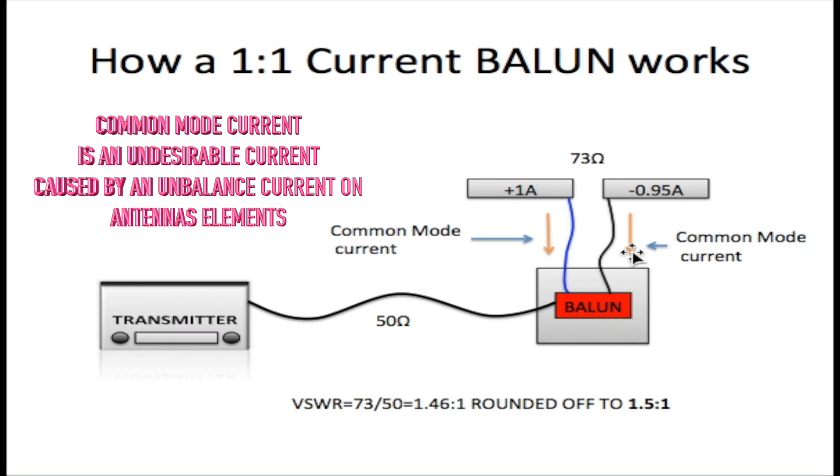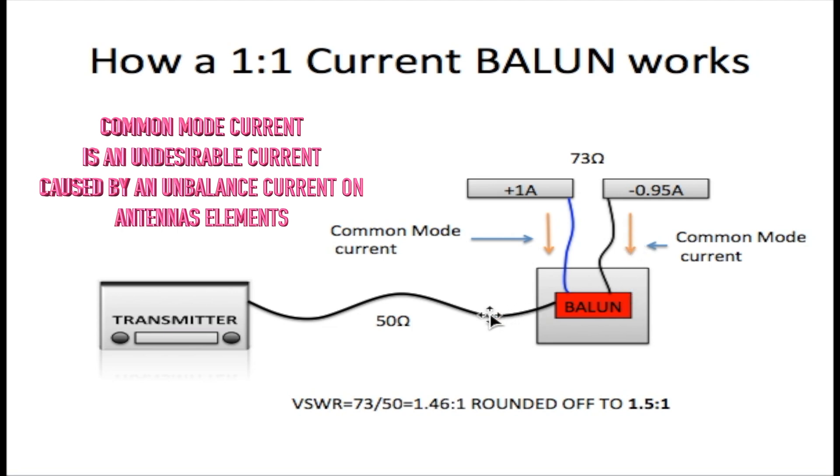It may not be a lot, but any kind of common mode current that gets onto this cable will cause a problem. So the purpose of this Balun is to stop the common mode current from getting through to the cable. The Balun has two purposes. It connects balanced to unbalanced and it also stops common mode current from getting back to the coaxial cable.